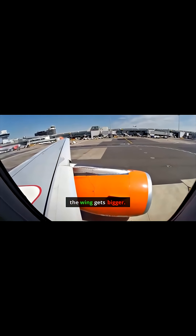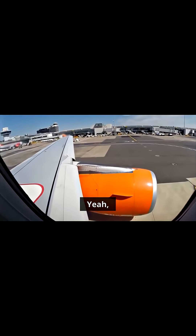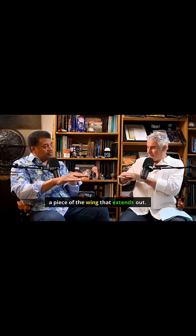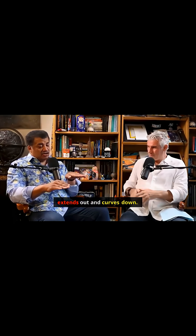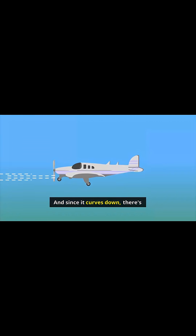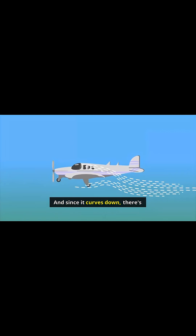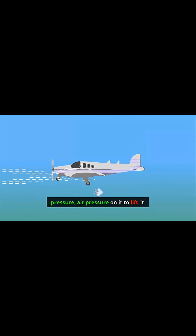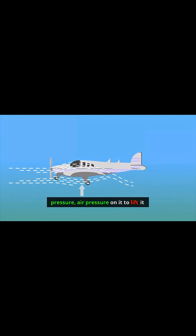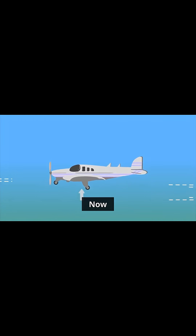Watch when a plane takes off and lands — the wing gets bigger. A piece of the wing extends out and curves down, so the more wing surface they have, the more lift. And since it curves down, there's air pressure on it to lift it up.